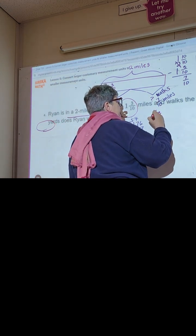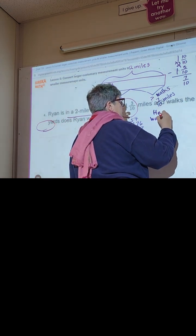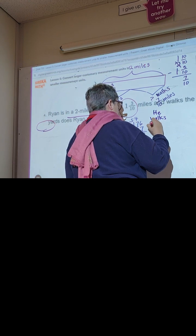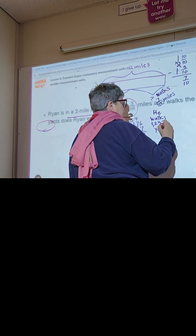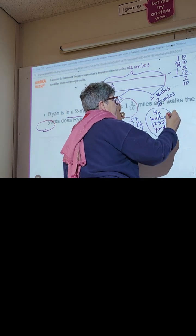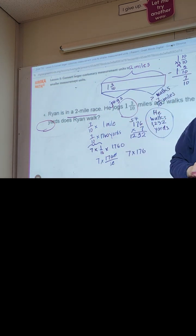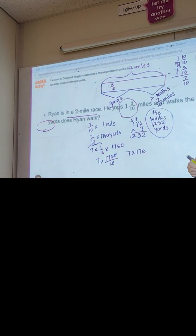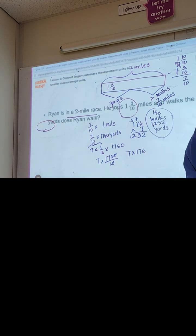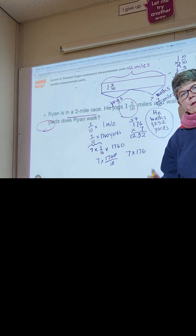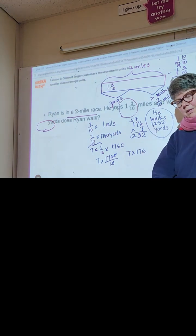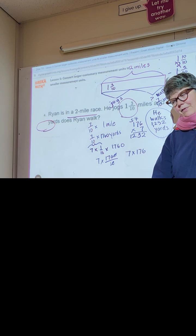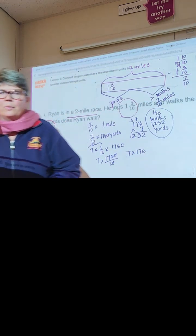We write our sentence: he walks 1,232 yards. That is a lot of writing and I went pretty fast, but make sure you have this all written down in your book for number four. Thank you for your hard work, and I will see you in the next video. Aloha!